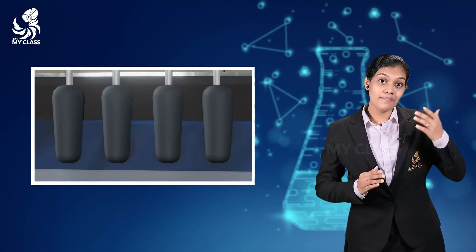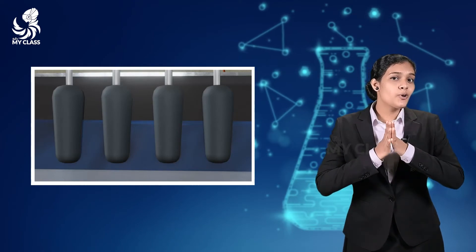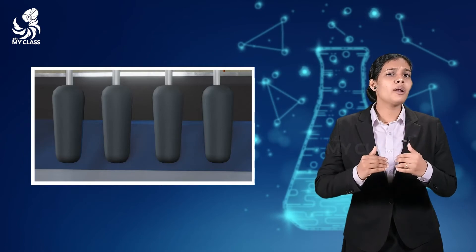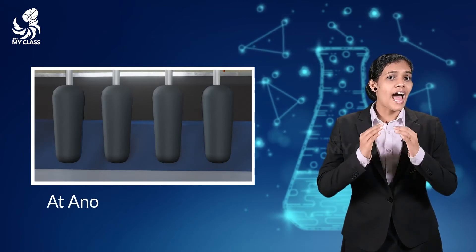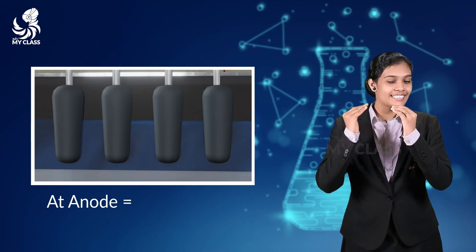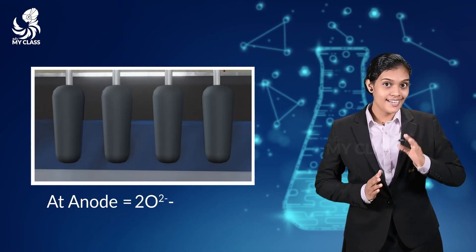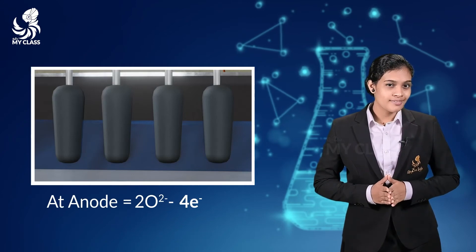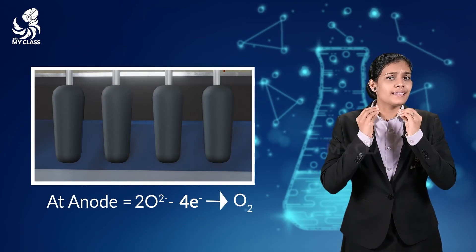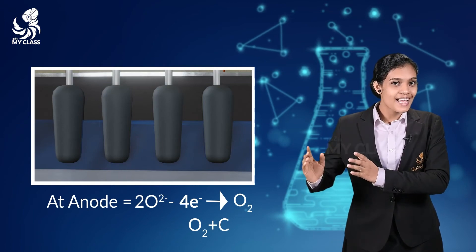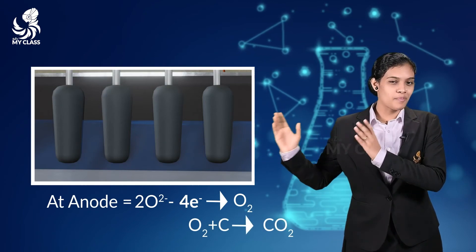At the anode, oxygen is liberated. This carbon anode reacts with the oxygen to form carbon dioxide. The anode reaction is: 2O²⁻ − 4e⁻ → O₂; then O₂ + C → CO₂.